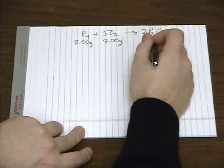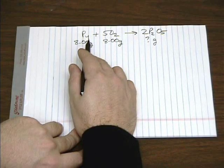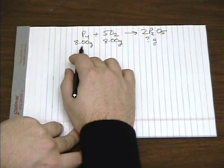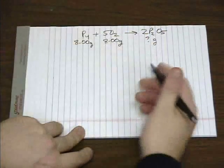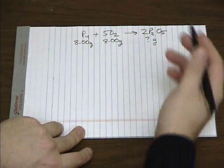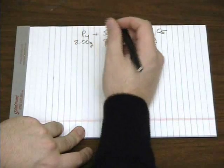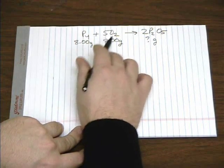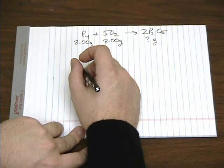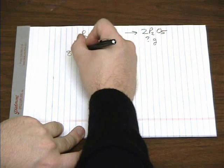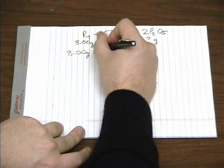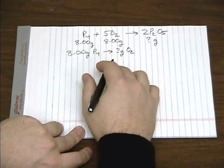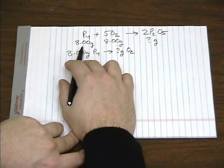So before we can answer this question, we need to see which one of these is actually going to be completely reacted, and which one's going to be left over in some amount of excess. One way to do that is to start by picking one of these and see how much of the other you're going to need. For example, how many grams of oxygen is actually required to react with eight grams of phosphorus?